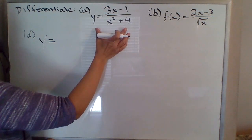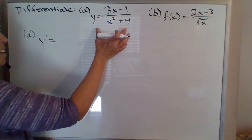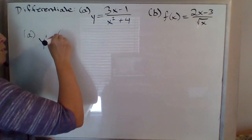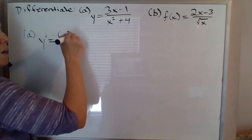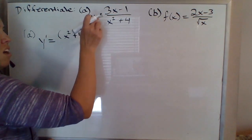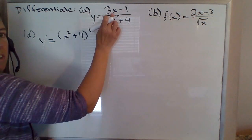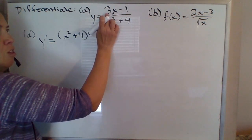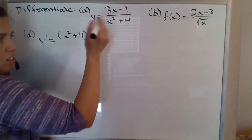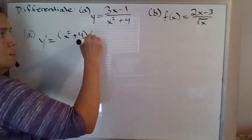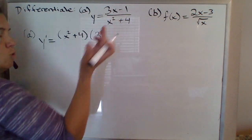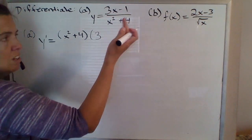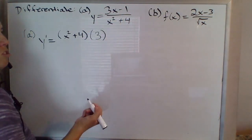Applied to this function here, the idea is to first leave the bottom alone. It's the bottom function times the derivative of the top. The derivative of the top here would be 3 times derivative of x is 1, so 3 times 1 is just 3, minus derivative of a constant is 0. So the derivative of the top there is just 3.